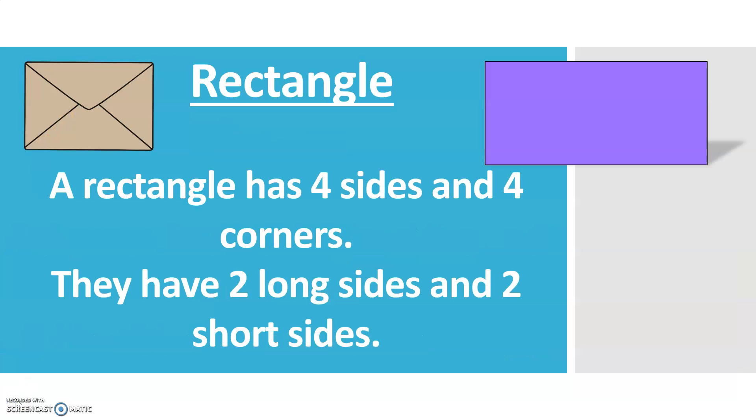A rectangle. A rectangle is like a square. It has four corners also and four sides, but the sides are different lengths. The sides that are opposite each other are the same length. So two long sides and two shorter sides. An example of a rectangle would be a mobile phone, a ruler, or an envelope.